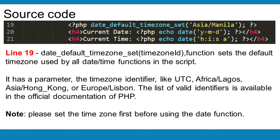Line 19: date_default_timezone_set(timezone_id) sets the default time zone used by all date/time functions in the script. It has a parameter — the time zone identifier — such as UTC, Africa/Lagos, Asia/Hong_Kong, or Europe/Lisbon. The list of valid identifiers is available in the official documentation of PHP.